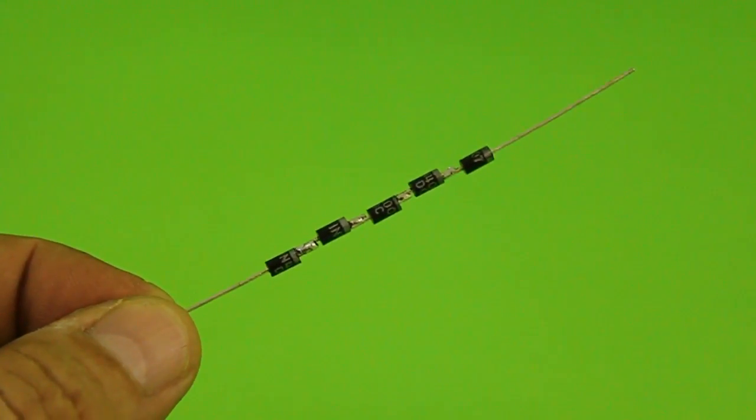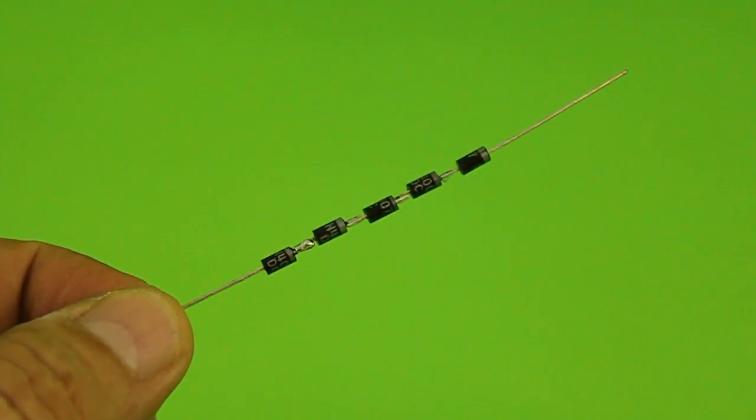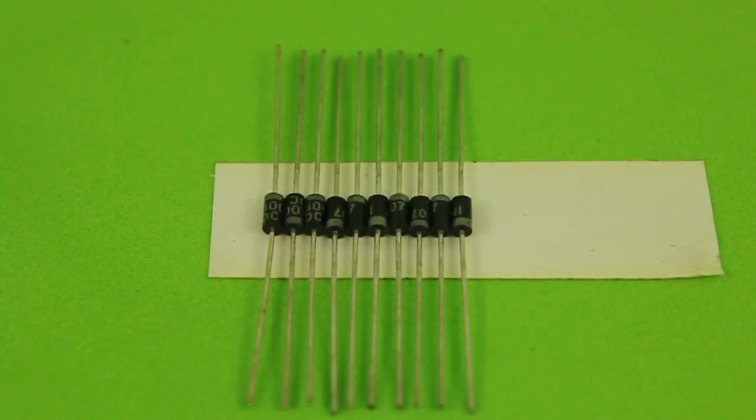So let's see a way to connect them in a more compact way. Let's make a 10kV diode using 10 1kV diodes.